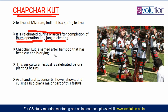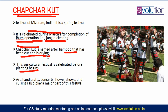In the northeast there are many bamboo forests. Chapchar Kut is named after bamboo that has been cut and is drying. Chapchar Kut means the bamboo has been cut from the jungles and is drying, and now we will go for agriculture. So this is an agricultural festival celebrated just before planting — you clear the jungle, celebrate Chapchar Kut, and then go for planting.